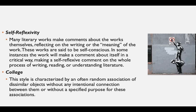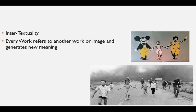Another style is collage, characterized by an often random association of dissimilar objects without any intentional connection between them or a specified purpose for these associations. You also see the elements of intertextuality — as in the picture of the Napalm girl, one of the iconic images of the Vietnam War, taken into another context and shown walking along with comic figures. That is the element of intertextuality happening: every work refers to another work or image and creates new meaning.